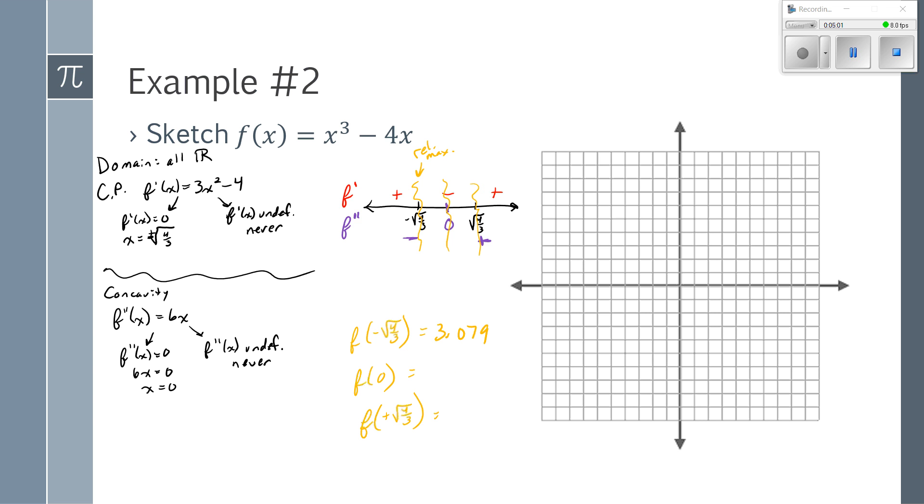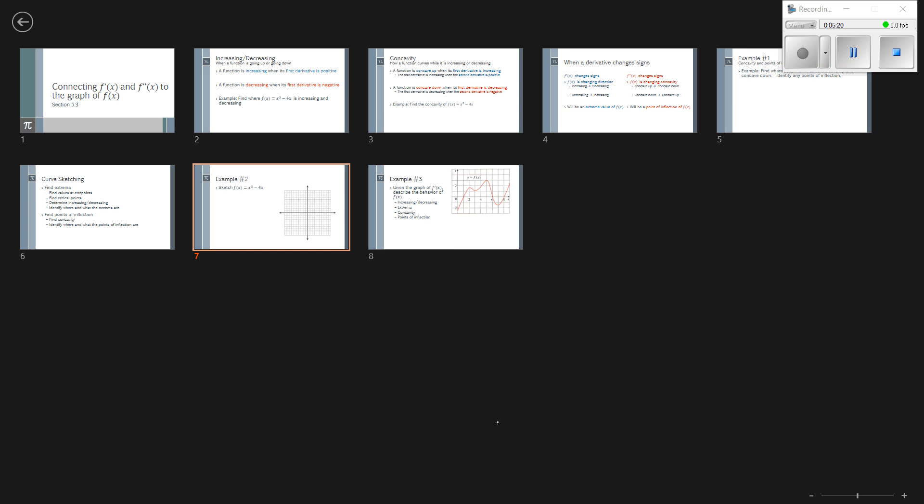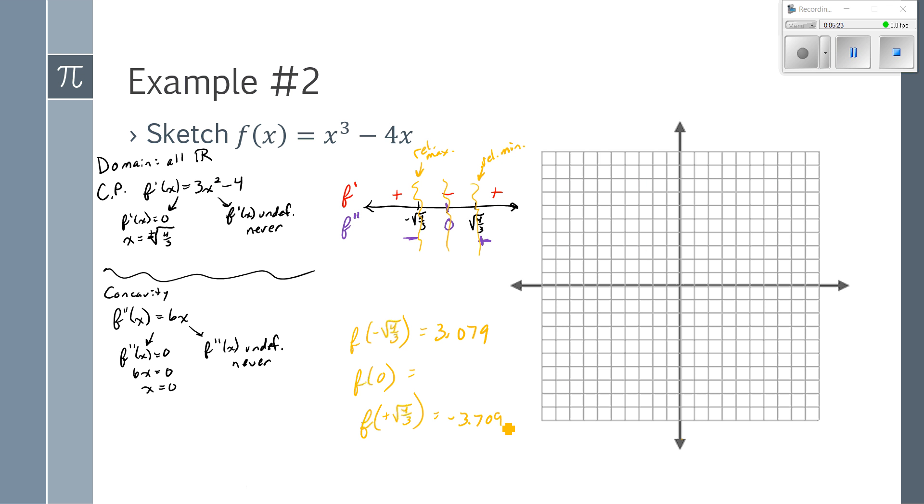So f of positive square root of 4/3, which is a relative minimum from my sign chart. And again, plugging it into my function. Whoops, sorry about that, because I want to know where to graph those. So negative square root of 4/3 is about negative 1.15 and then 3.079. So right around here is my relative max. My relative min, 1.105 is right about here.